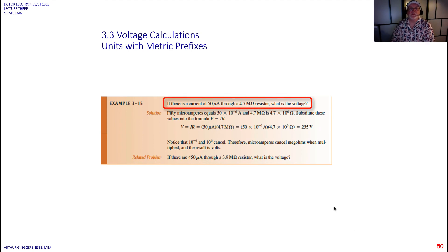If there is a current of 50 microamps through a 4.7 mega ohm resistor, what's the voltage? Again, you should look at that question and go, what are the metrics telling me?